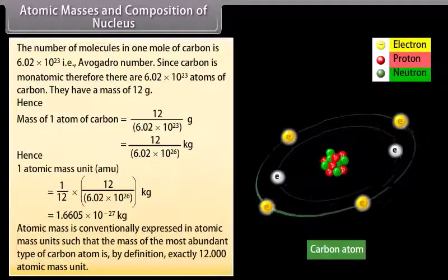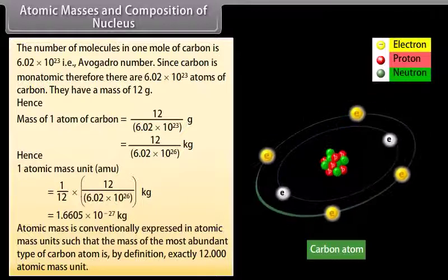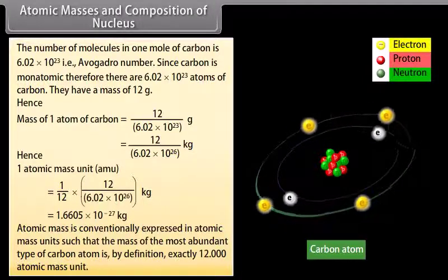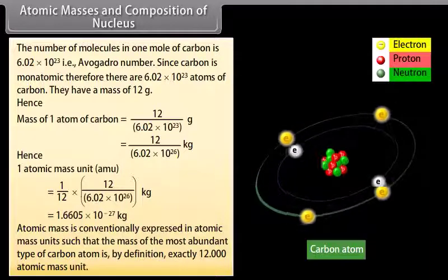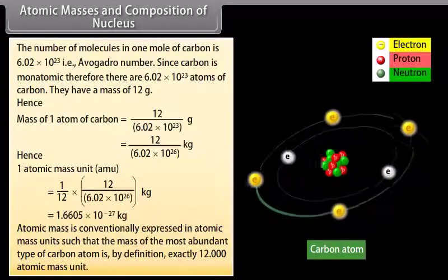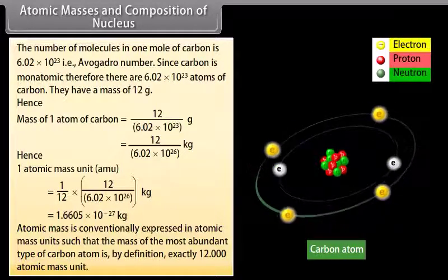Atomic mass is conventionally expressed in atomic mass units such that the mass of the most abundant type of carbon atom is, by definition, exactly 12 atomic mass unit.